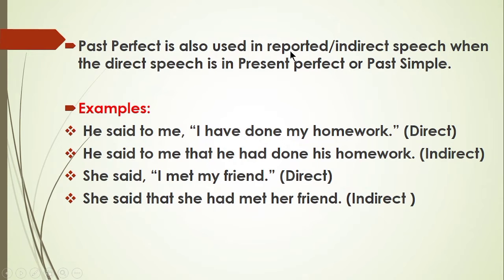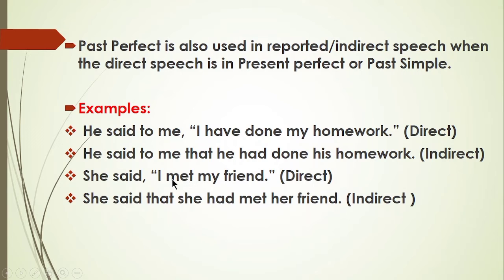Past perfect is also used in reported or indirect speech when the direct speech is in present perfect or past simple. When we convert a sentence from direct speech into indirect speech, and the direct speech is in present perfect or past simple, it is converted into past perfect in indirect narration. For example: 'He said to me, I have done my homework' — present perfect in direct speech — becomes 'He said to me that he had done his homework' in indirect speech. 'She said I met my friend' — past simple — becomes 'She said that she had met her friend.'